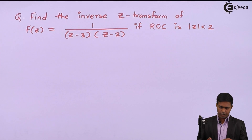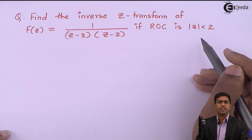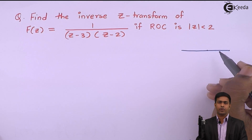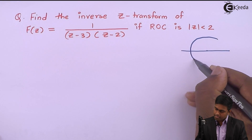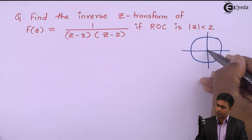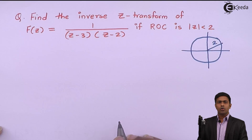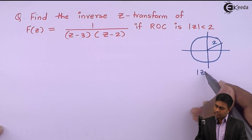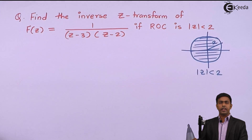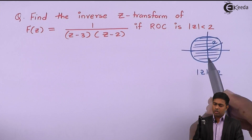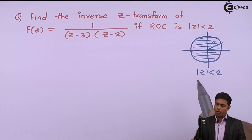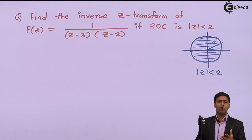To understand this region we will draw it. We know that |z| = a is a circle with center at the origin and radius equal to a. Here, a = 2, so |z| < 2 is the region inside a circle of radius 2. Inside this circle the radius is less than 2, so this is the area where we get the set of values of z for which the Z-transform is convergent.